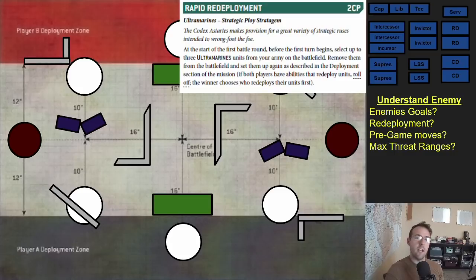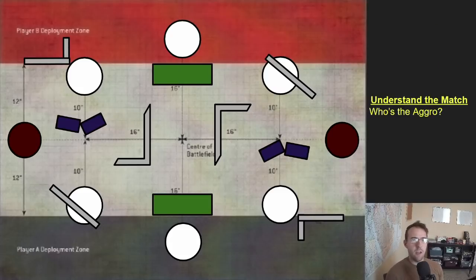Now that we've understood our enemy and analyzed the opponent's list before the game has even started, we can also go to start analyzing the match. And this can never be done in a vacuum. The way a blood angels player like myself would play against that same ultramarines list is very different than a tau list would play against them. How would you analyze the matchup?